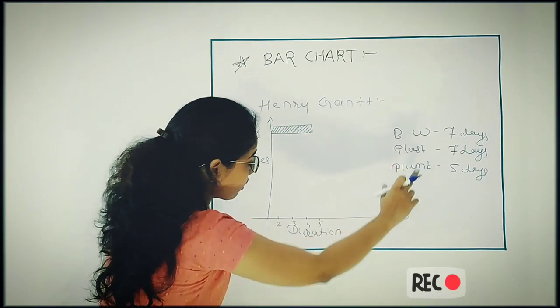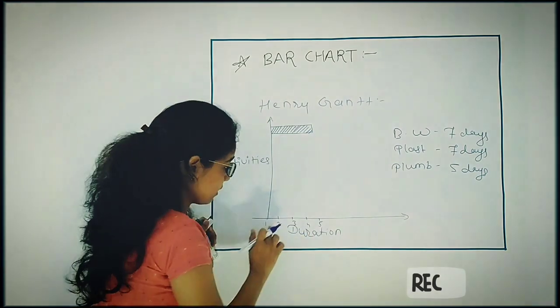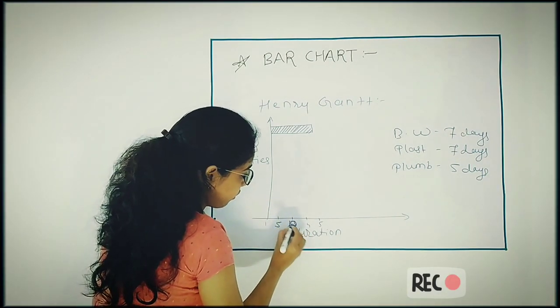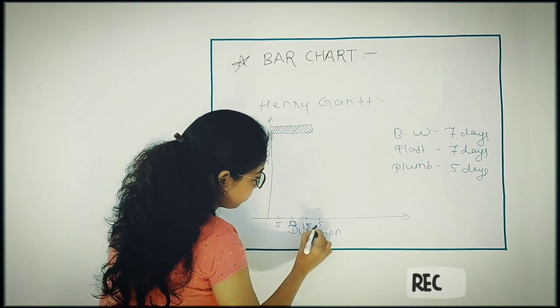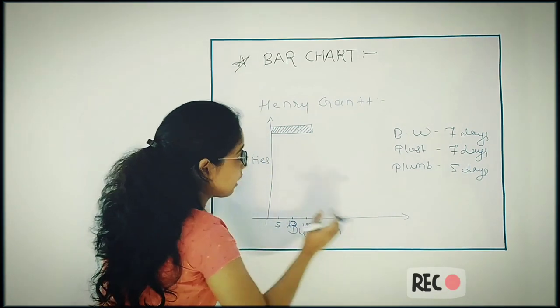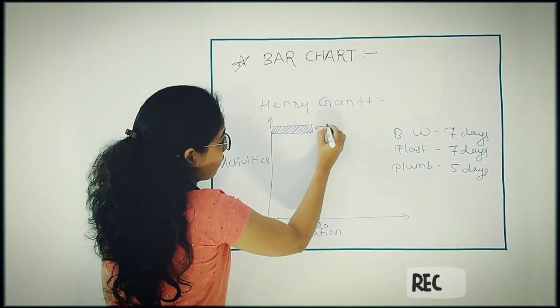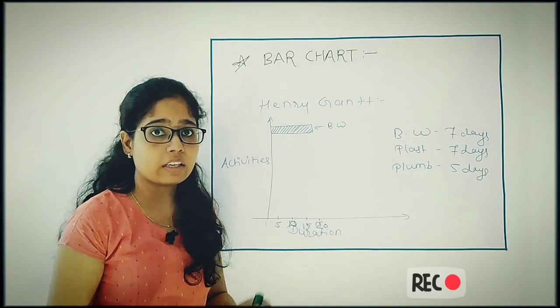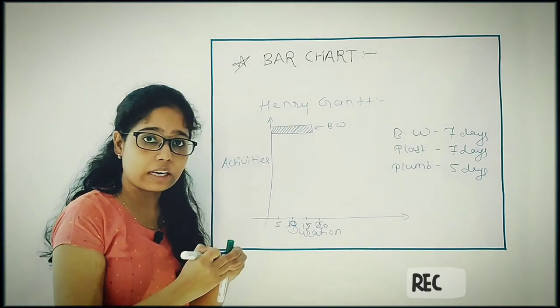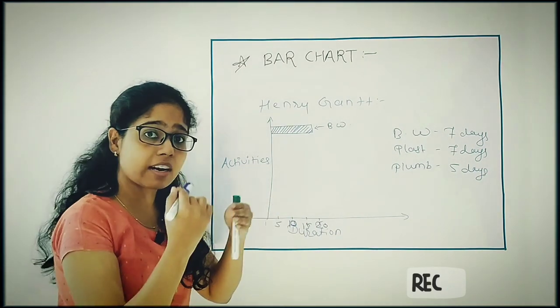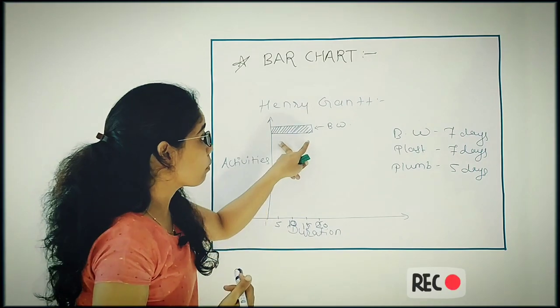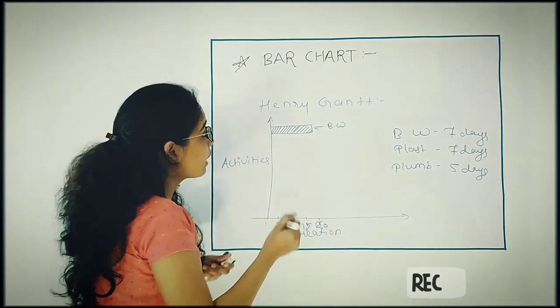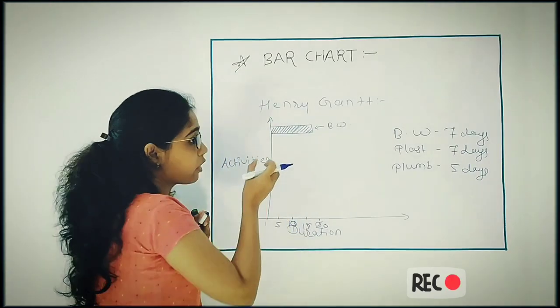First activity is your brick work having duration seven days. Let me assume one centimeter is equal to five days. So this is my scale, and this is my first activity, brick work. Now second is your plastering. I have to see on that particular schedule that my plastering may start simultaneously or after the completion of whole brick work.